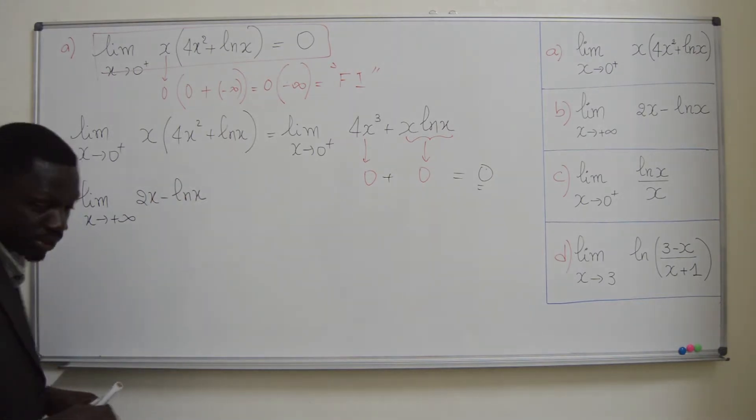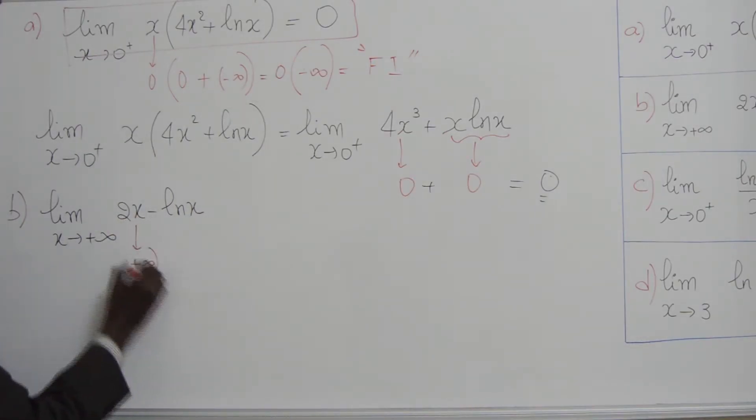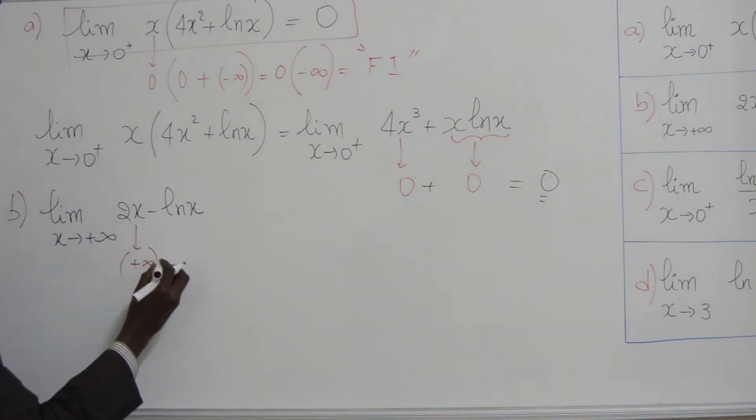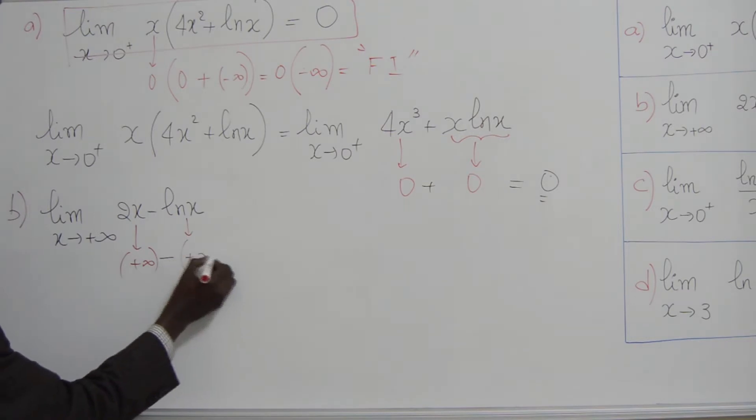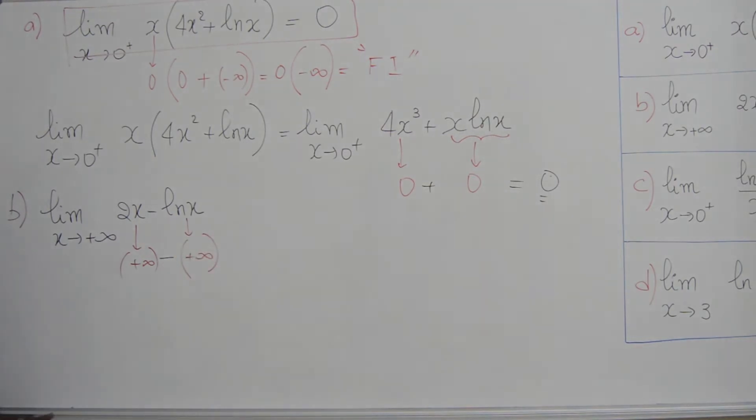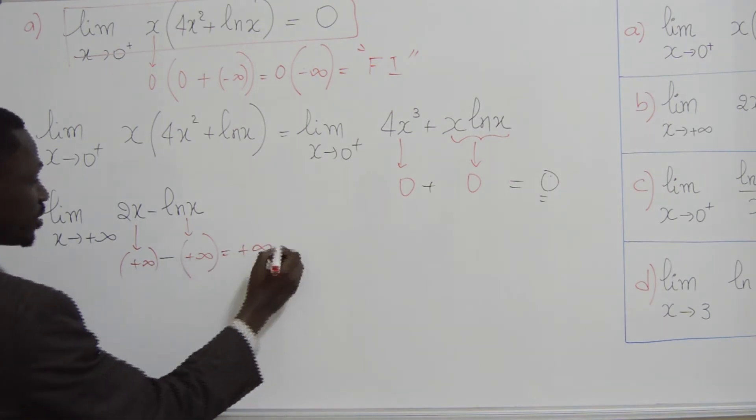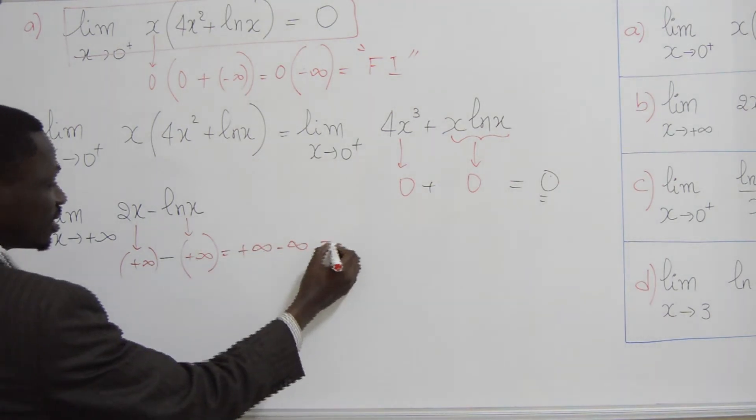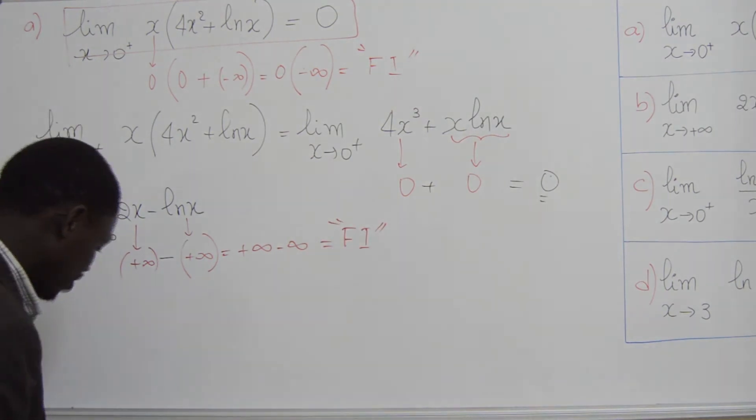Alors, le calcul direct, ça donne: 2x quand x tend vers plus l'infini, c'est plus l'infini. Alors, moins ln2x quand x tend vers plus l'infini, également, c'est plus l'infini. Alors, ça donne plus l'infini, moins 1 fois plus l'infini. Et comme résultat, on a une forme indéterminée.